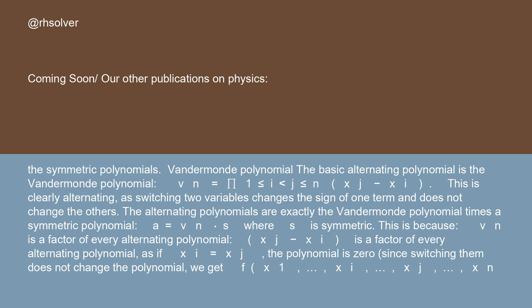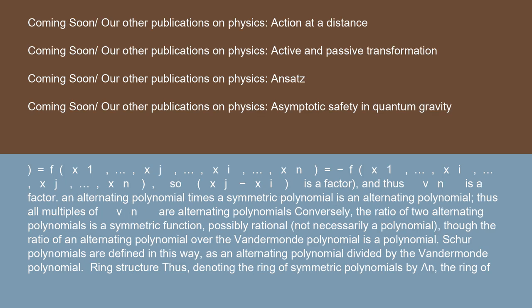(xj minus xi) is a factor of every alternating polynomial, as if xi equals xj the polynomial is zero. Since switching them does not change the polynomial, we get f(x1, ..., xi, ..., xj, ..., xn) equals f(x1, ..., xj, ..., xi, ..., xn) equals minus f(x1, ..., xi, ..., xj, ..., xn). So (xj minus xi) is a factor, and thus V_n is a factor.